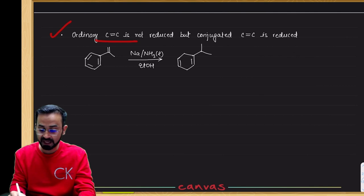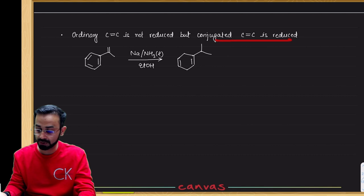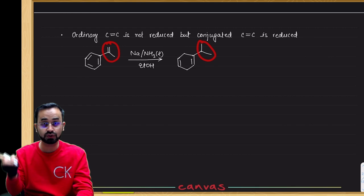Secondly, ordinary C=C bonds are not reduced, but if C=C is in conjugation, it will be reduced. Like here, the C=C will be reduced. When you do it with benzene, there will be a reduction. But because the double bond outside was conjugated, it will be reduced. So that is the Birch reduction.